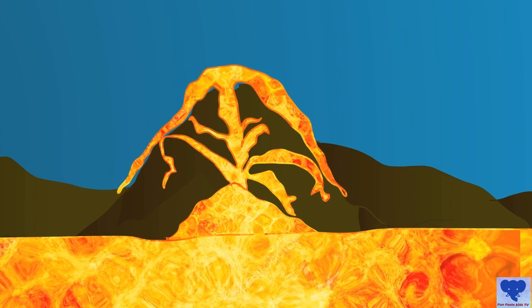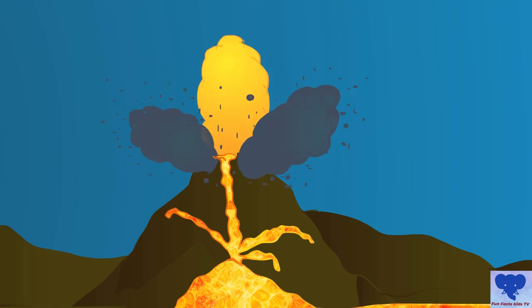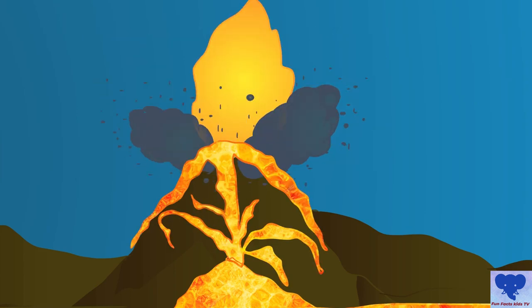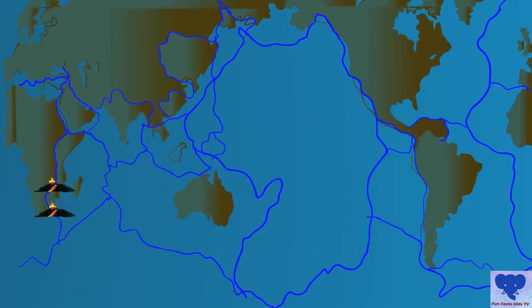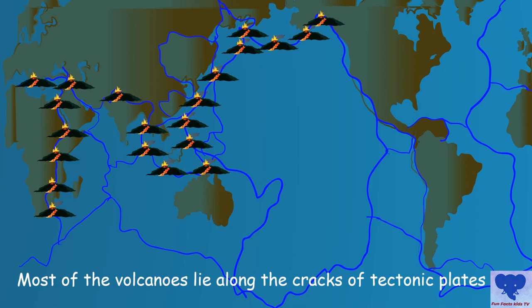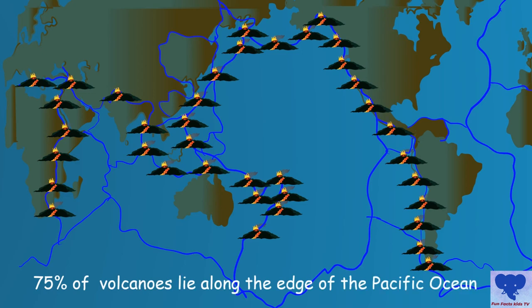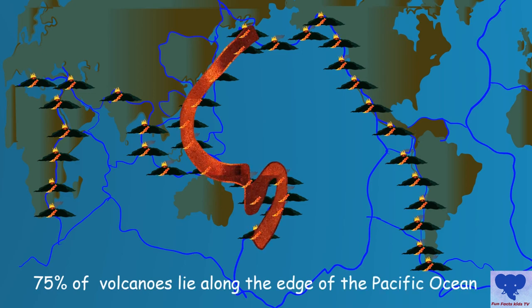Most of the volcanoes lie along the cracks between tectonic plates. There are about 75% of the earth's volcanoes which lie along the edge of the Pacific Ocean, also called the Ring of Fire.